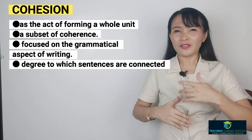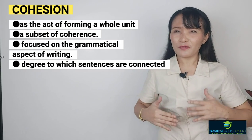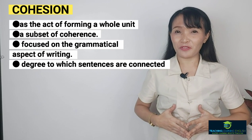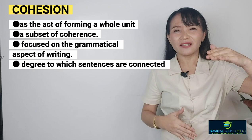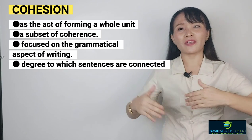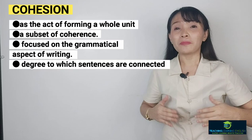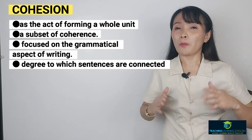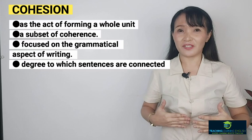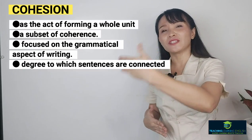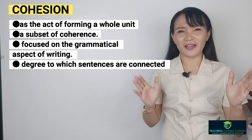This is the best analogy for cohesion. Cohesion is defined as the act of forming a whole unit. It is effectively a subset of coherence. It is focused on the grammatical aspect of writing and refers to the degree to which sentences are connected so that the flow of ideas is easy to follow. When one sentence is connected properly to the next sentence, it becomes a perfect paragraph.